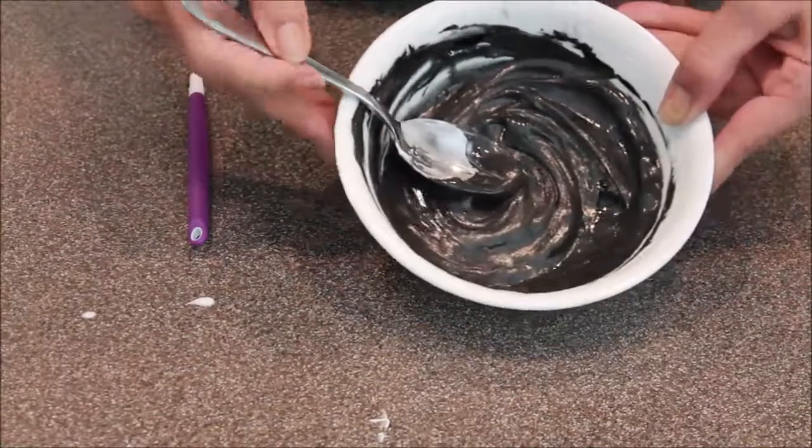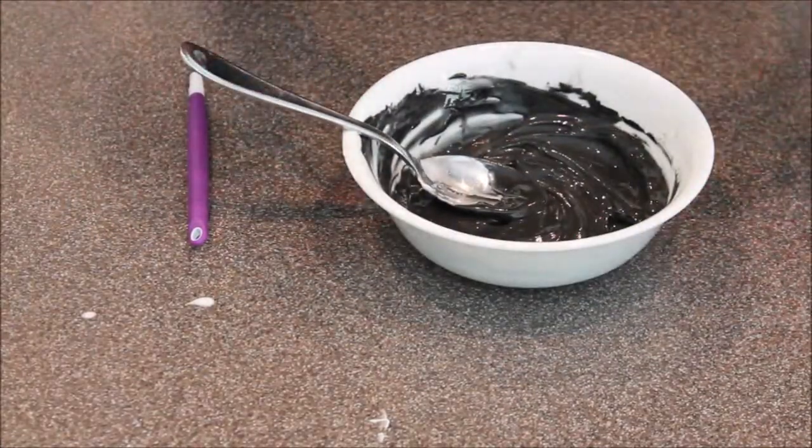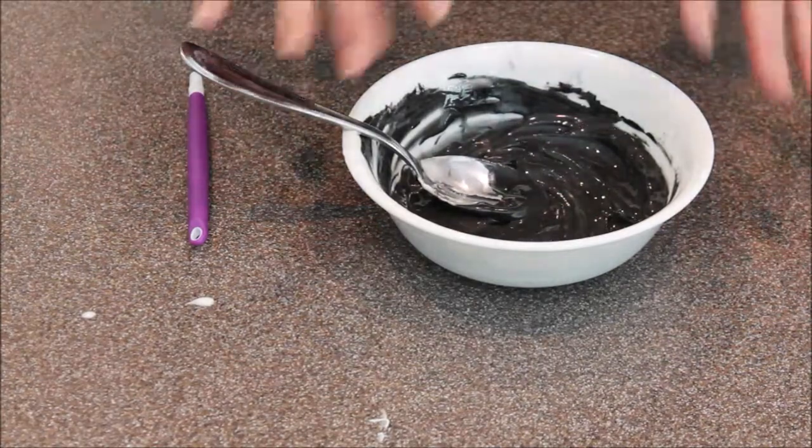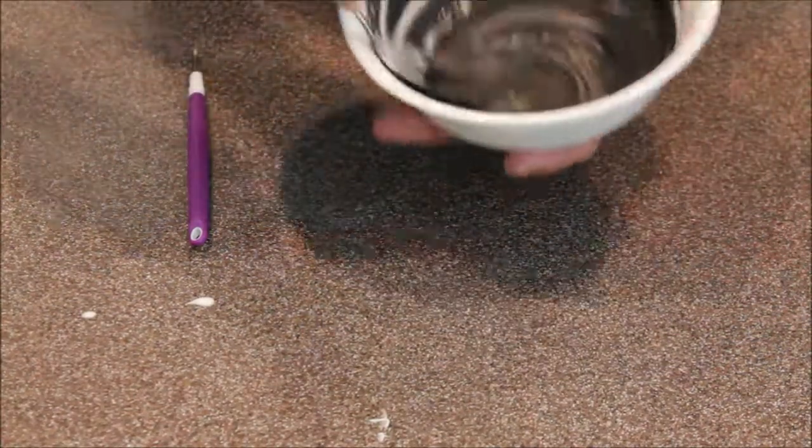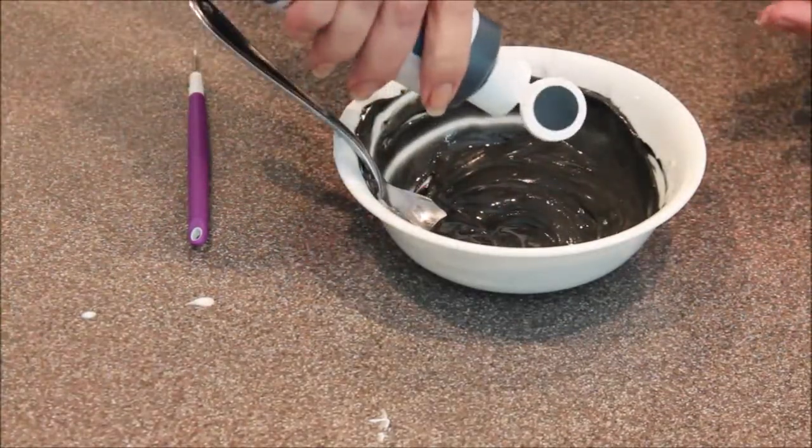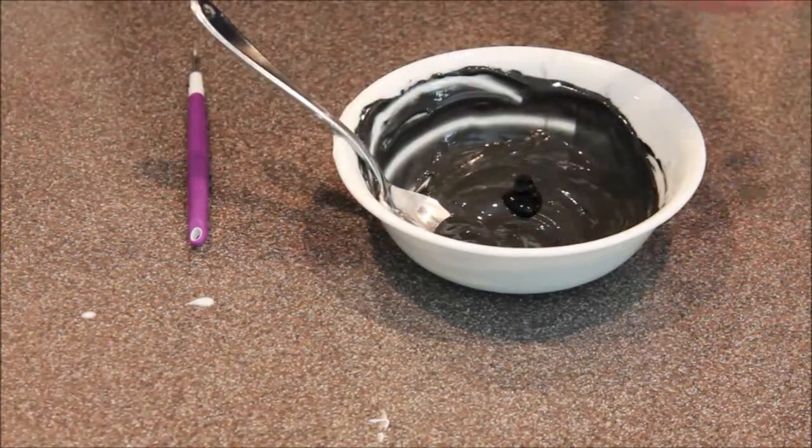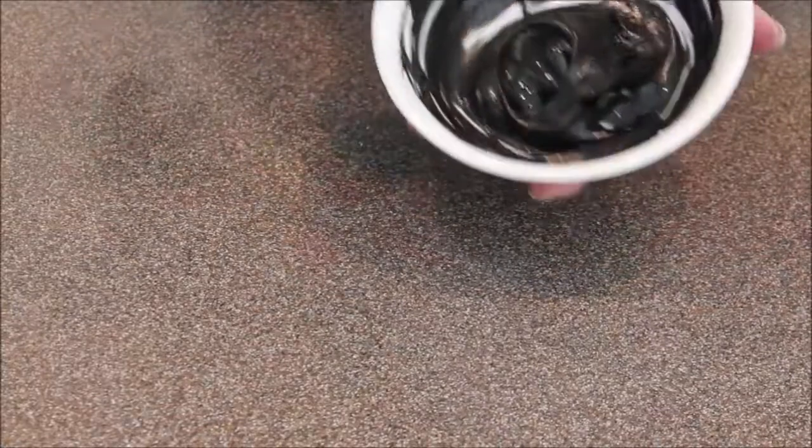Now you can see it's really kind of a dark gray but we're going to let it set for a minute because sometimes just setting for a minute will actually darken it. Okay so I'm looking at it and still pretty much a dark gray so I'm going to add just a little bit more food color and then do some more mixing. All right, now you can see that we've got a nice dark black.